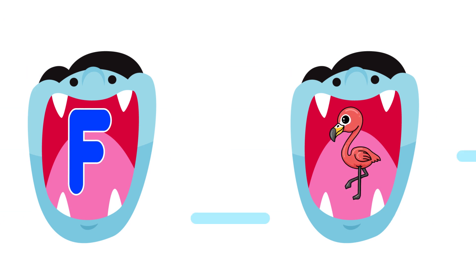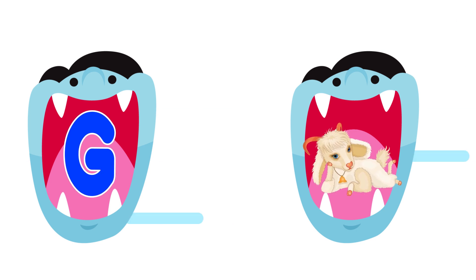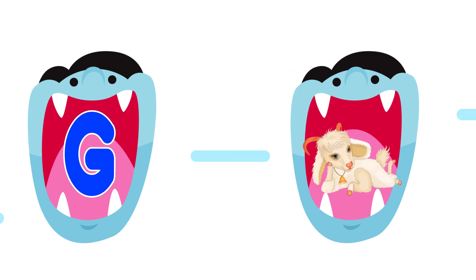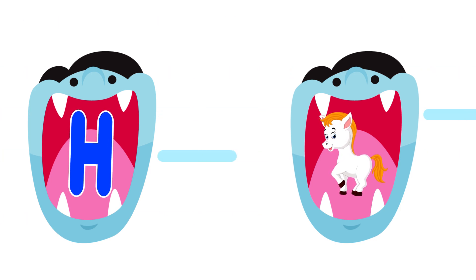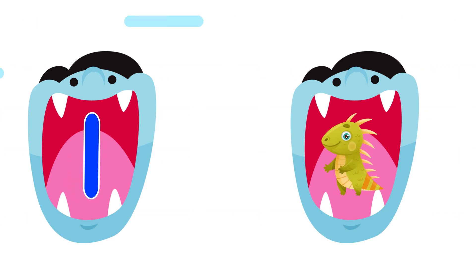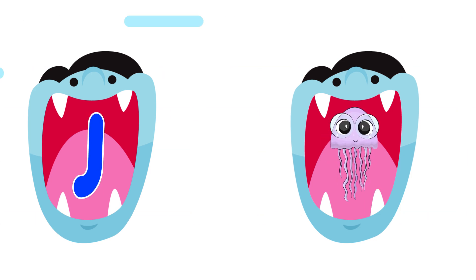G is for goat. Goat, goat, goat. H is for horse. Horse, horse, horse. I is for iguana. Iguana, iguana.